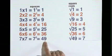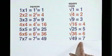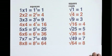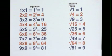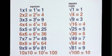7 squared is 49. Root 49 is 7. 8 squared is 64. Root 64 is 8. 9 squared is 81. Root 81 is 9. 10 squared is 100. Root 100 is 10.